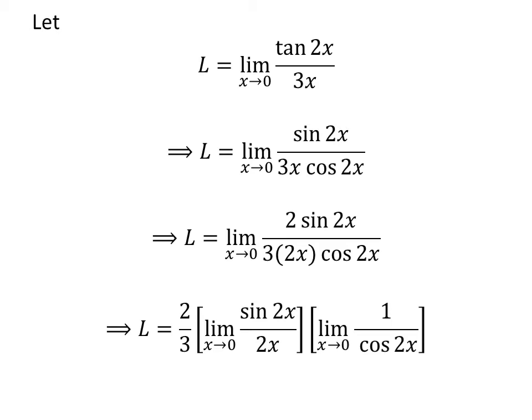As 2 upon 3 is a constant, we can write the above expression as L is equal to 2 upon 3 times limit of sine of 2 times x upon 2 times x as x approaches 0 times limit of 1 upon cosine of 2 times x as x approaches 0.